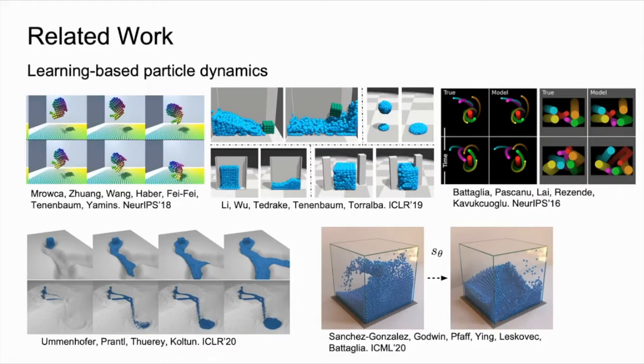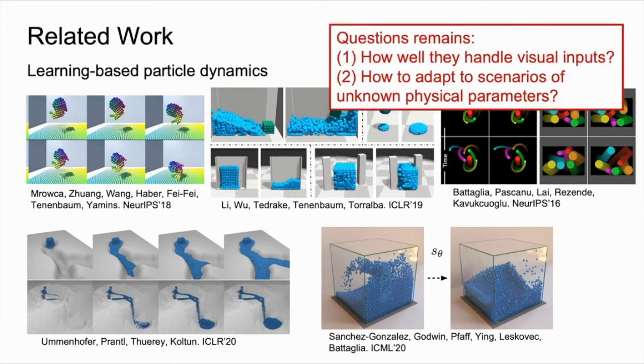Learning-based particle dynamics has recently gained attention in physical reasoning and control. Particles provide a dense and flexible representation that is well-suited for representing objects with diverse materials and dynamical properties. Particles also facilitate relational inductive biases for more generalizable dynamics modeling. Still, it remains the question of how well we can handle raw visual inputs and adapt to environments of unknown physical properties. Inference and visual grounding of the essential physical properties remains a challenging research problem.